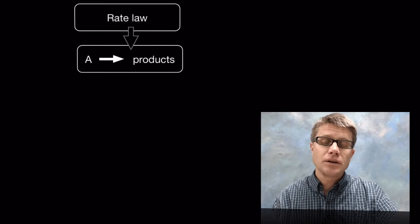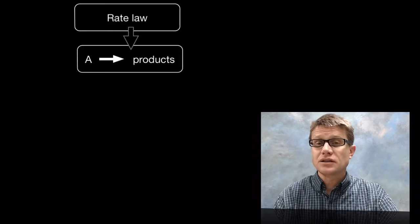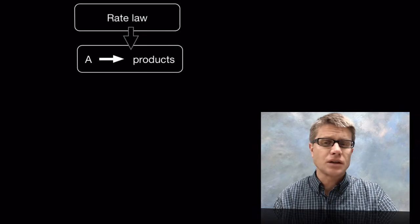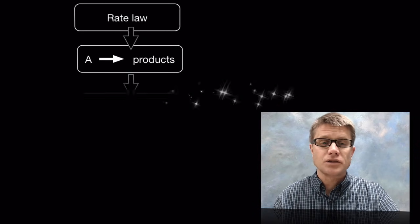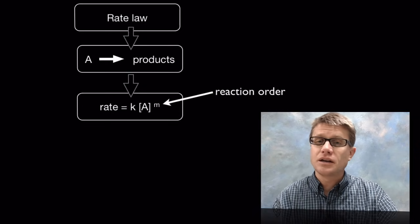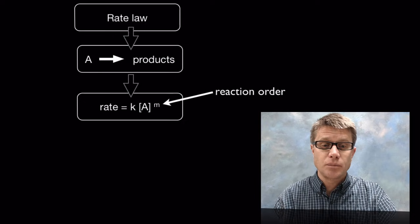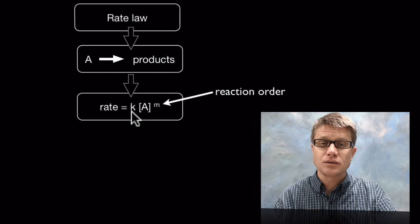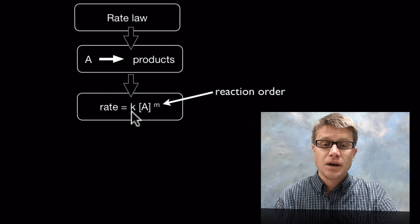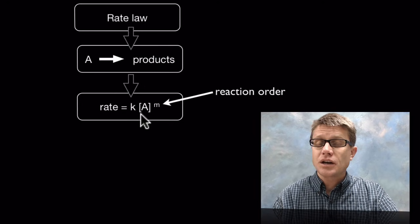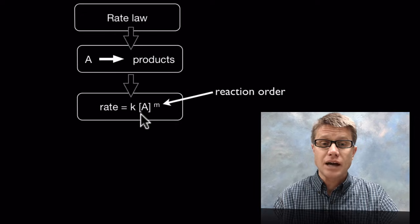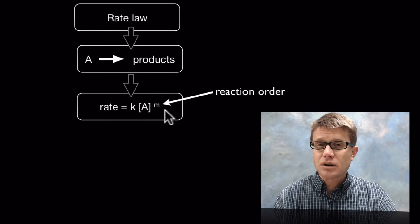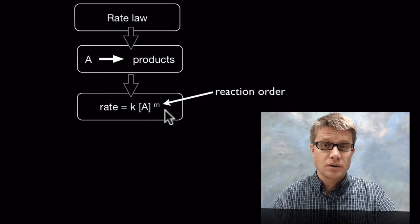The rate law refers to the amount of reactants being consumed — we don't concern ourselves with what products are being made. Here's the equation: rate is equal to k times the concentration of the reactant A raised to the m power. K is the rate constant, which we'll cover in the next video. That exponent m tells us the reaction order.